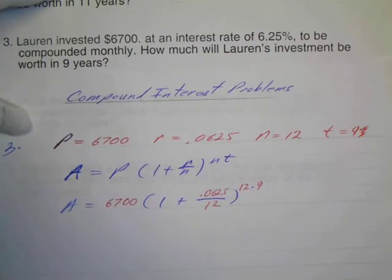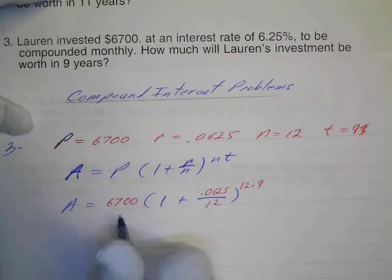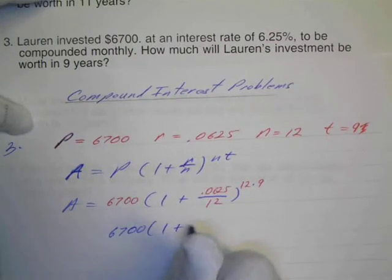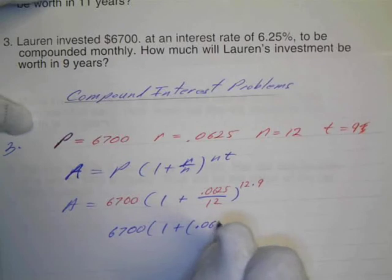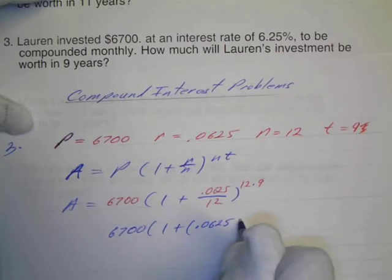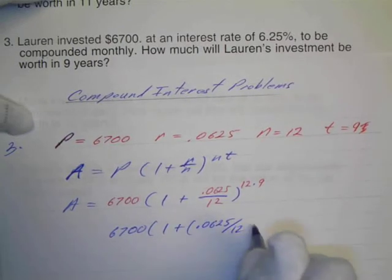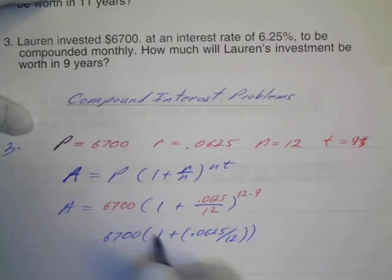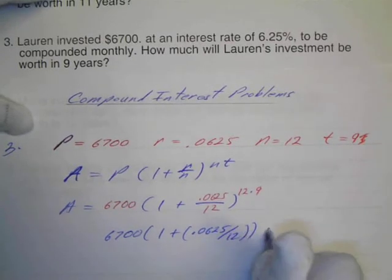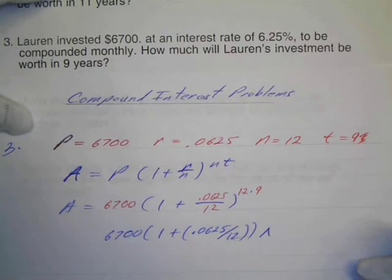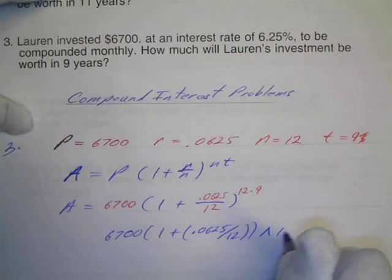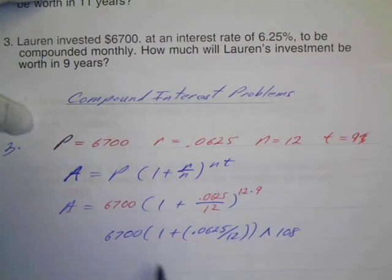Now when I put this in the calculator, again, I've got to keep extra parentheses around this, so I'll write 6,700, parentheses, one plus, and then I'll put a parentheses around the fraction. 0.0625 goes on the top and divided by 12. A parentheses for the fraction and parentheses for this whole area. And then I'm going to have caret and my power will be, that's 12 times nine, 108. So that's how my calculator will do it.